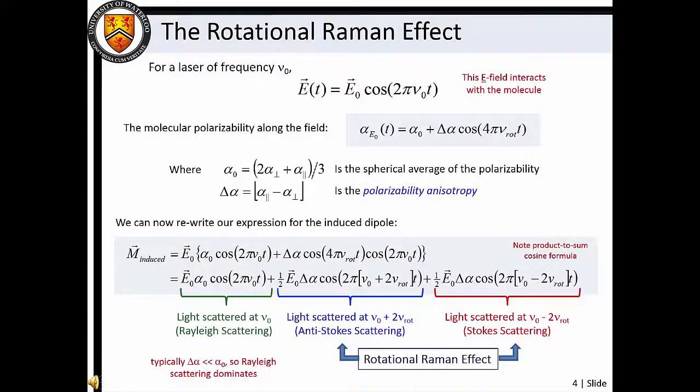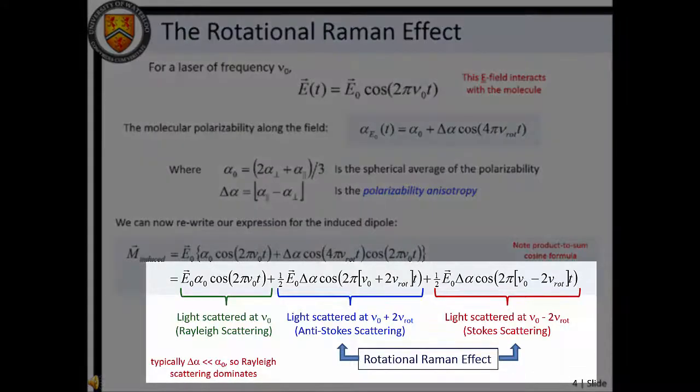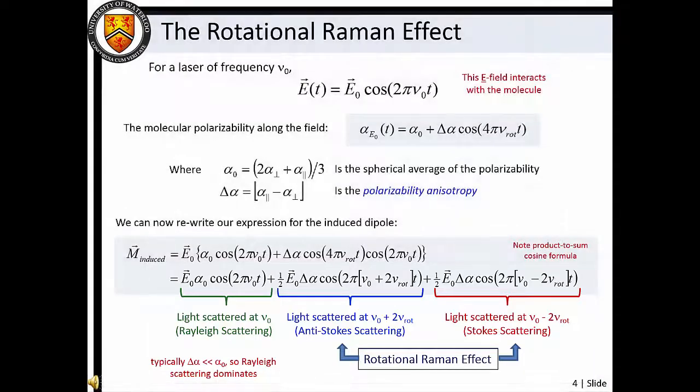We can describe the time-dependent oscillation of the laser field in terms of the laser frequency. The molecular polarizability along the field direction can be described in terms of the spherical average of the polarizability and the polarizability anisotropy. Thus, the time-dependent induced dipole moment has frequency components at the same frequency as the incident laser light and at the laser frequency plus or minus the rotational frequency. The first term is associated with Rayleigh scattering. The second two terms are associated with the rotational Raman scattering effect. Note that because the spherical average of the polarizability is in general much larger than the polarizability anisotropy, Rayleigh scattering is the dominant scattering process.